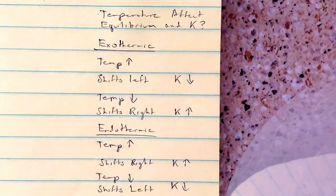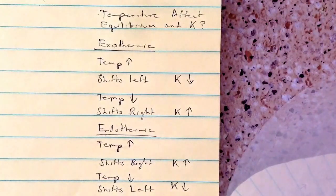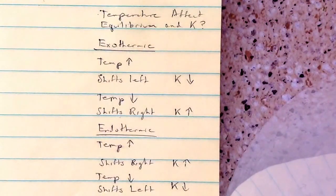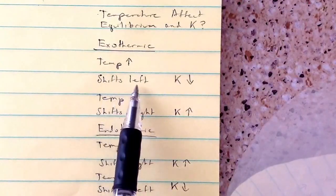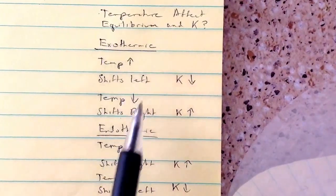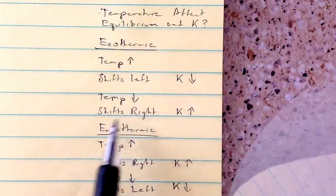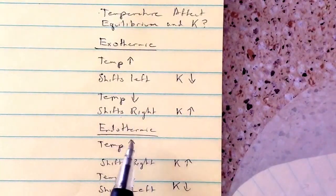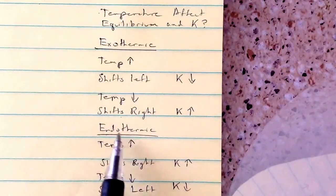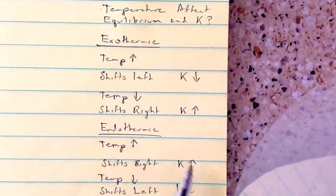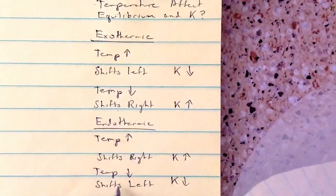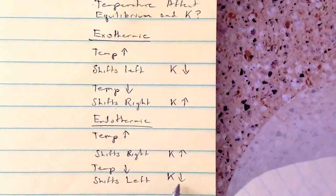This video is about how temperature affects equilibrium and K. Here's a summary: if the equation is exothermic and temperature increases, equilibrium shifts left and K decreases. If it's exothermic and temperature decreases, it shifts right and K increases. If the equation is endothermic and temperature increases, it shifts right and K increases. If temperature decreases, it shifts left and K decreases.